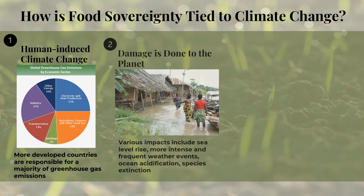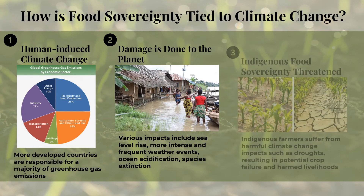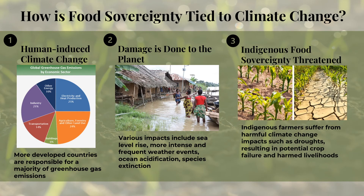Warming temperatures as a result of climate change will have disastrous impacts on our planet. Various impacts include sea level rise, more intense and frequent weather events, ocean acidification, and species extinction. Climate change threatens indigenous food sovereignty because many farms on indigenous lands suffer the consequences of climate change. They face events like droughts and floods that might destroy their crops and thus their ability to control their food systems.